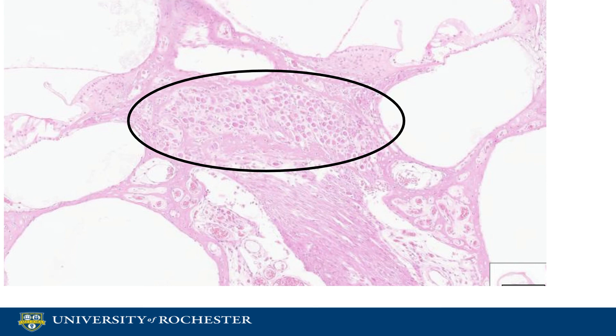The sound waves transmitted by the organ of Corti are sent to the brain via nerve cells known as spiral ganglion, as pictured here.